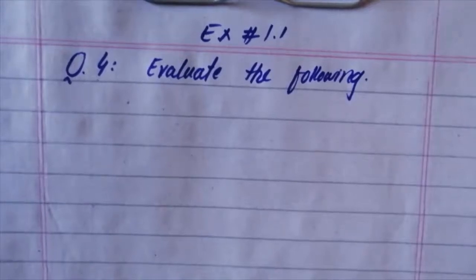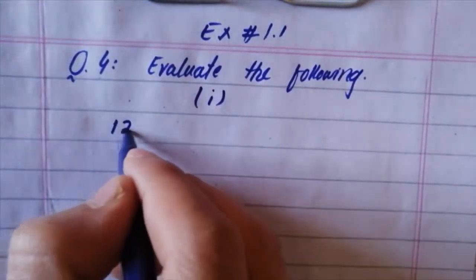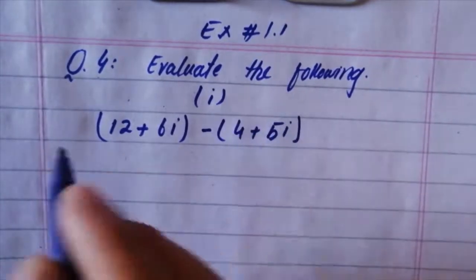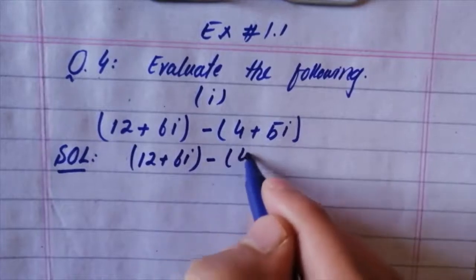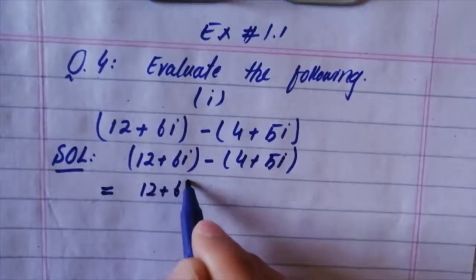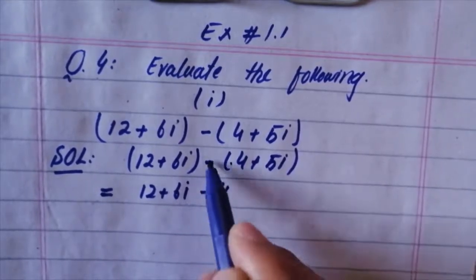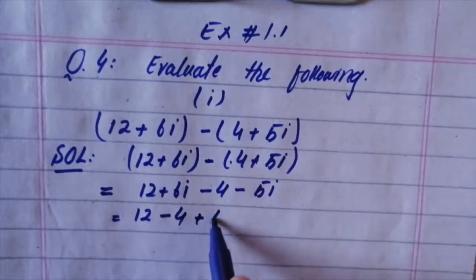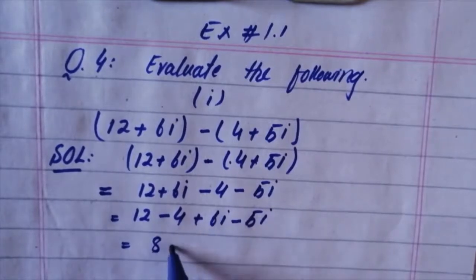Question number 4, Exercise 1.1: Evaluate the following. Part 1: (12 + 6i) minus (4 + 5i). Solution: 12 + 6i minus 4 + 5i. We get 12 minus 4 equals 8, and 6 minus 5 equals 1i. Answer: 8 + i.